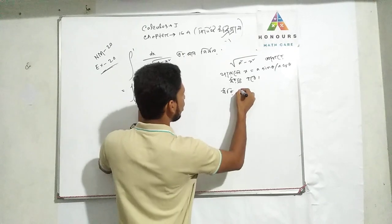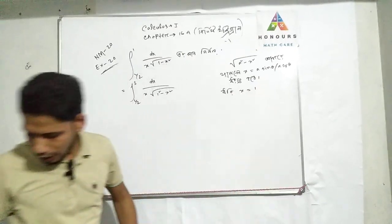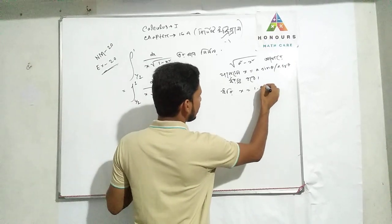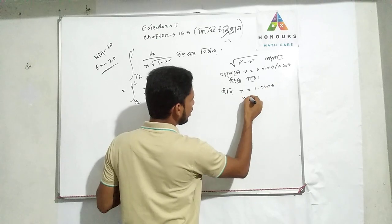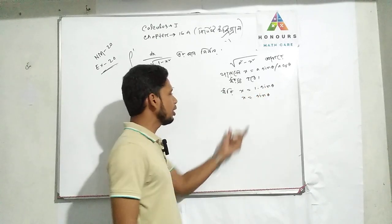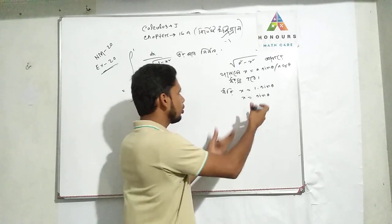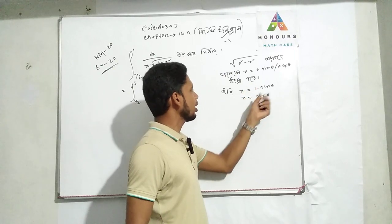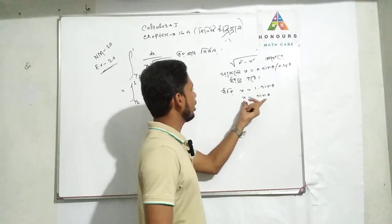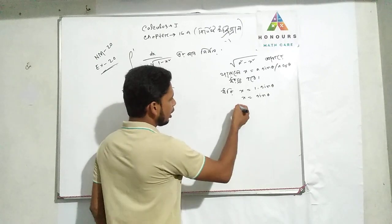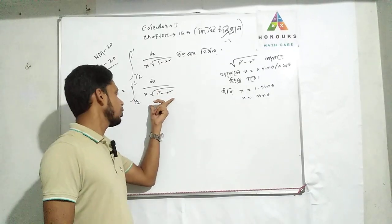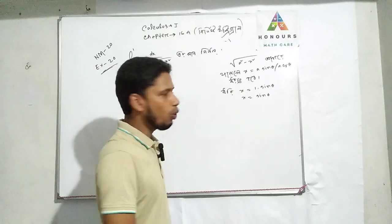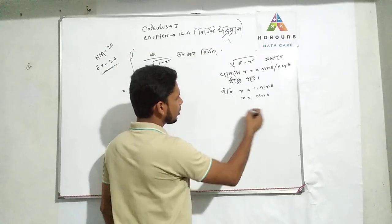We have a equals 1, so x equals 1 times sin theta. Then we have x equals sin theta. So we have dx equals sin theta, which means x equals sin theta. Until this integral is a single one, we have dx equals sin theta. Now we have an integral. So let's move on.